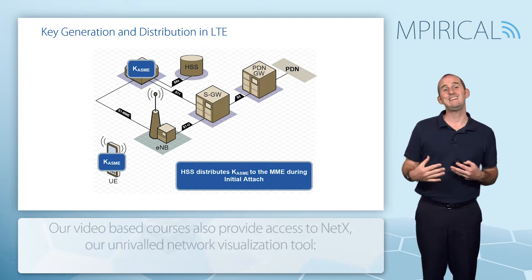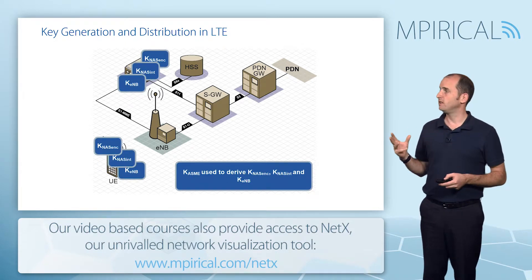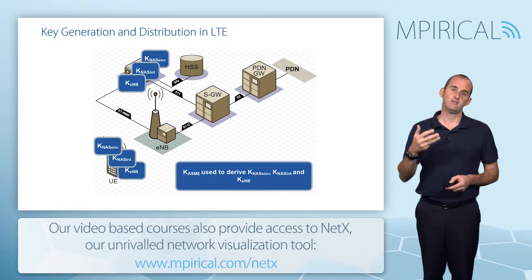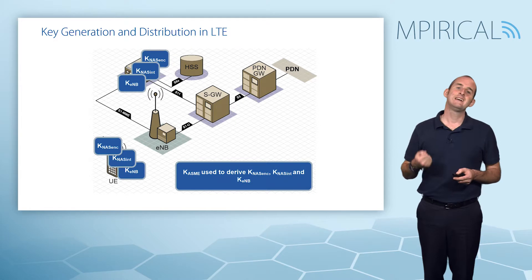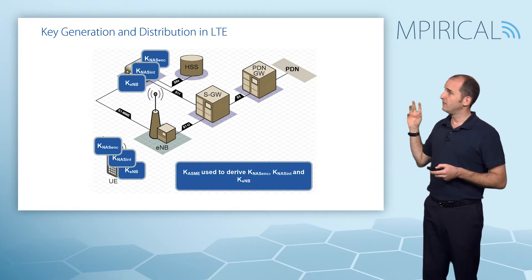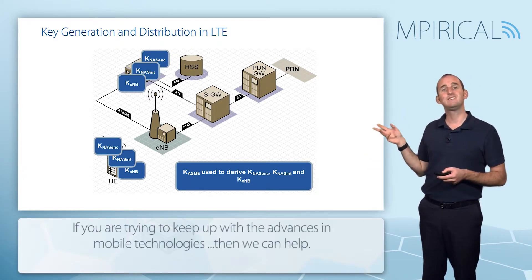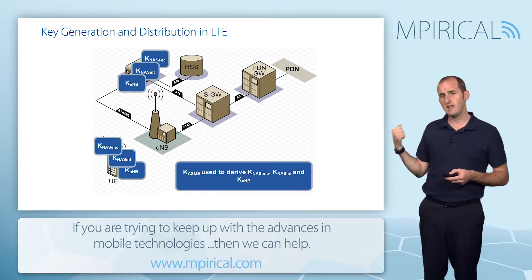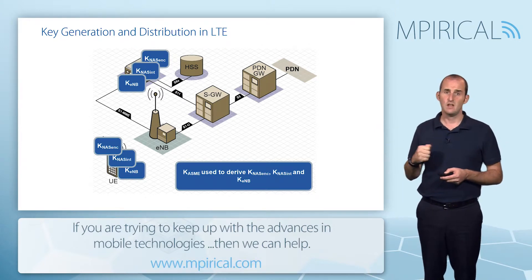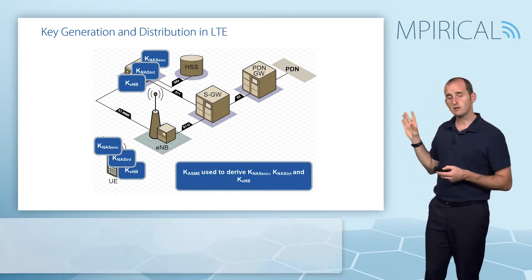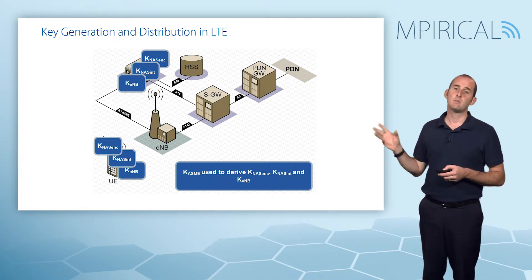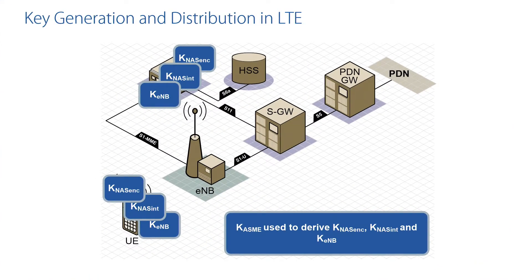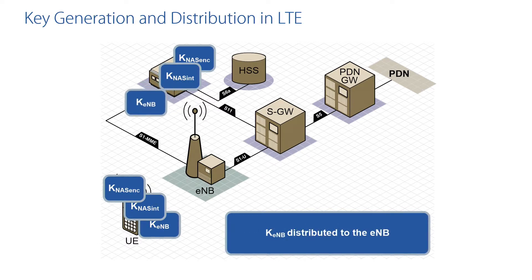Once KASME is established, it can be distributed to the MME. At both the MME and the user equipment, KASME is used with a key derivation function to generate the keys for NAS encryption, NAS integrity checking, and also a key called KE Node B. Identical copies of those keys are held at the mobile and at the MME.